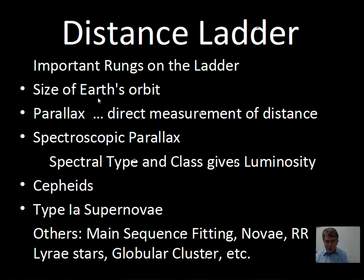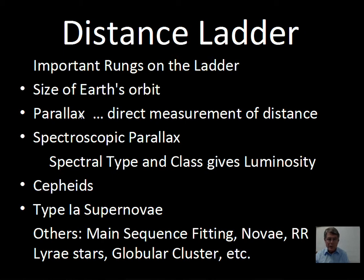Here is an abbreviated list of distance methods. The first crucial distance is the size of the Earth's orbit, which is needed to calculate directly the distance to nearby stars using the parallax method. The Earth moves from one side of the Sun to the other over six months around its orbit, and nearby stars shift a little bit in their apparent location on the sky. That amount of shifting directly relates to how far they are from the Sun — a direct measurement. This parallax is the first rung on the ladder.